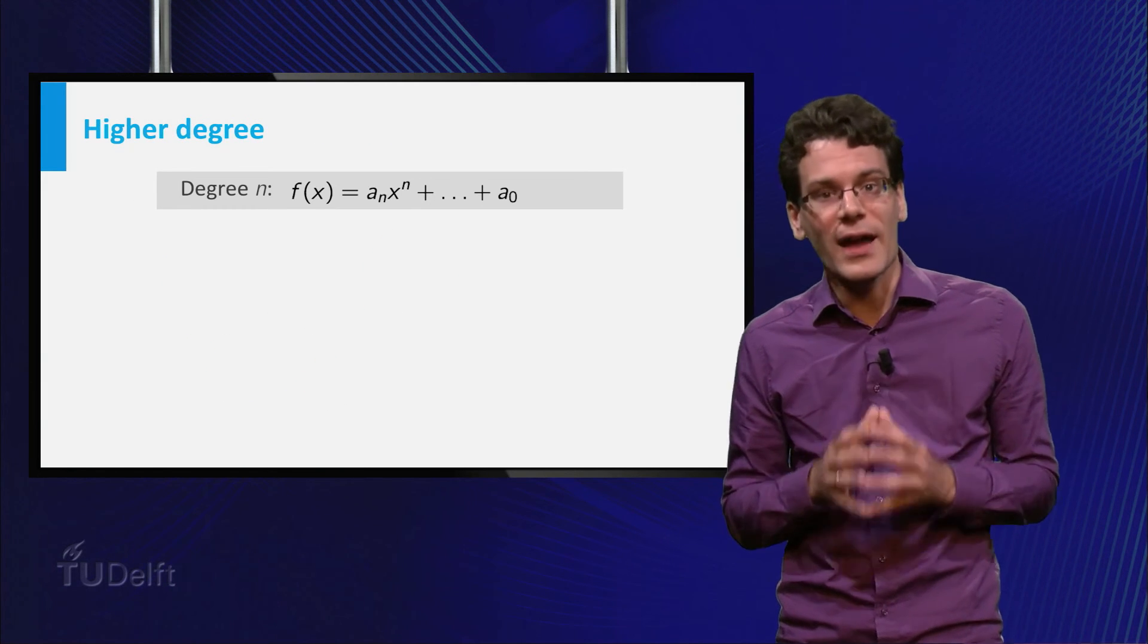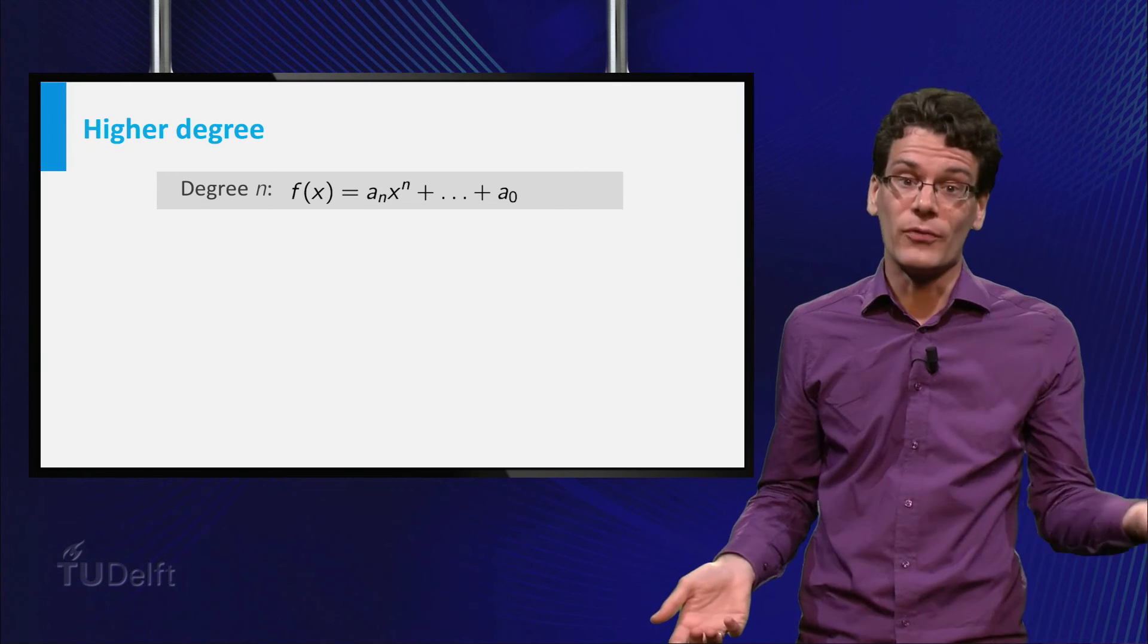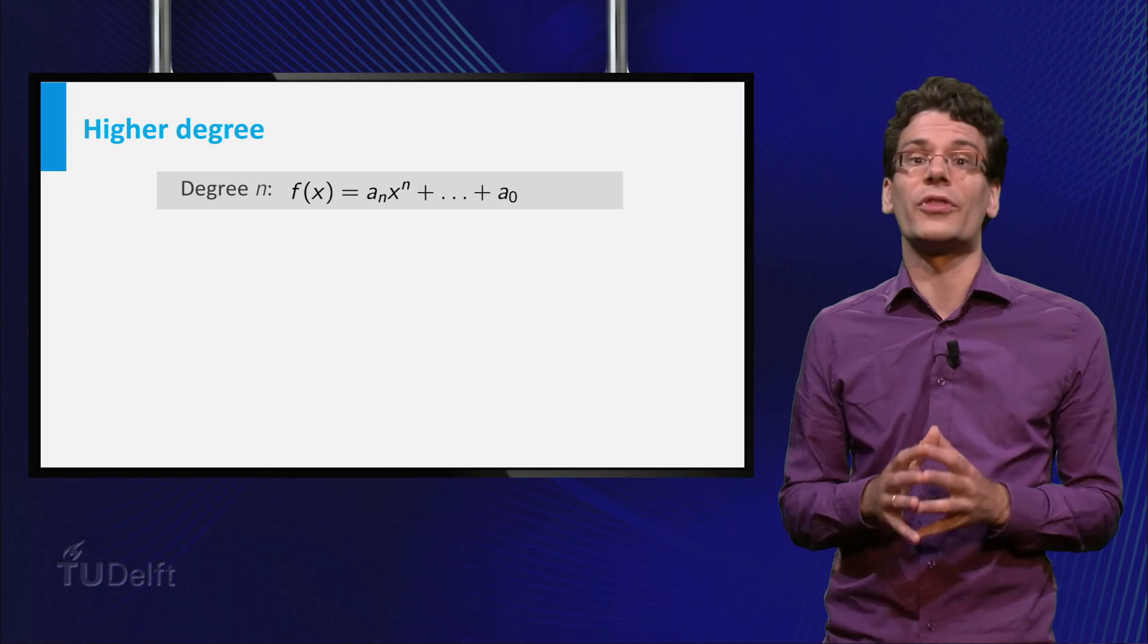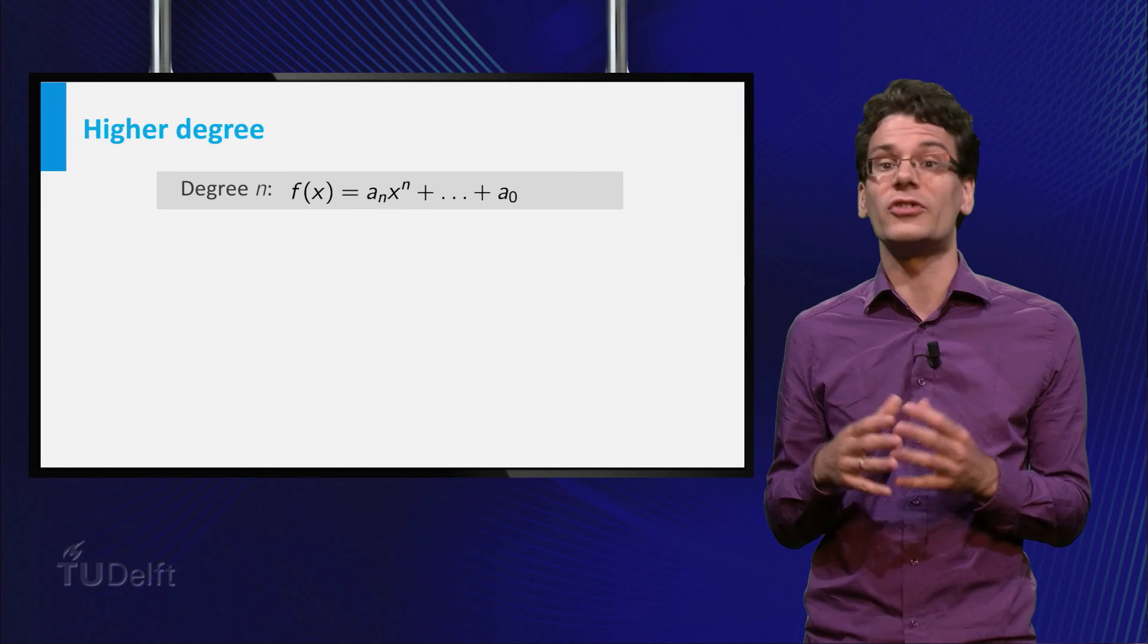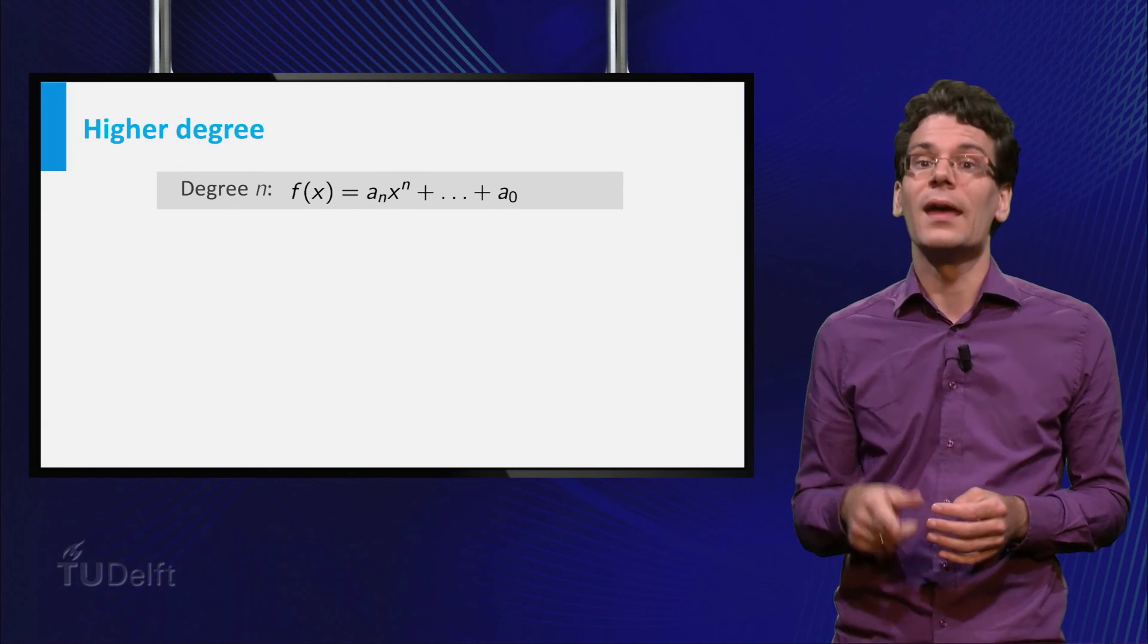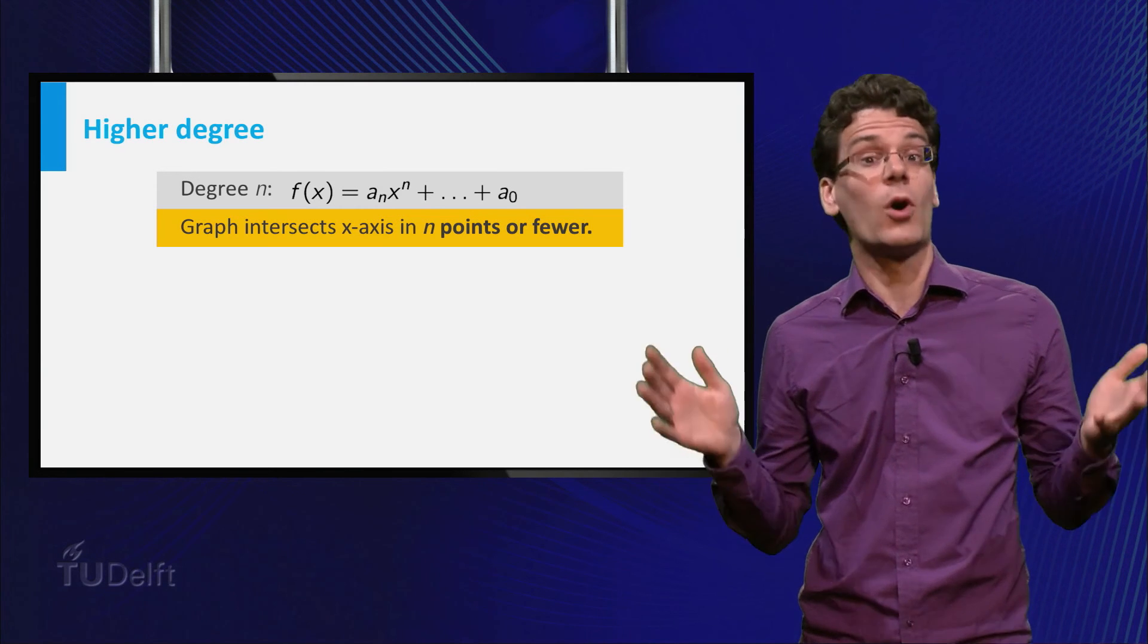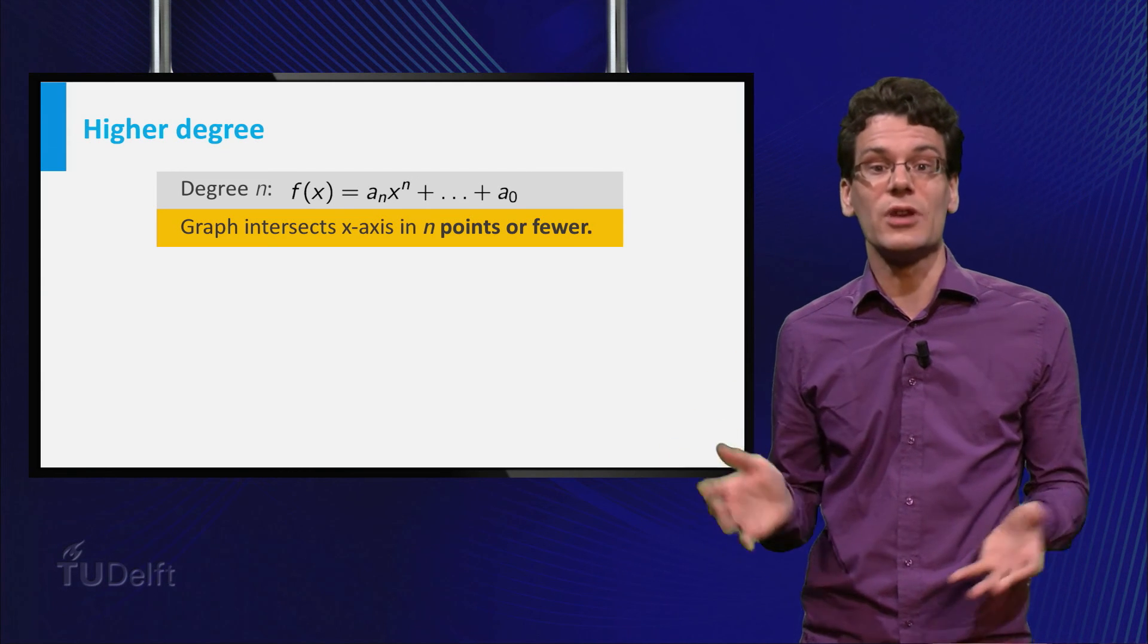What about polynomial functions of higher degree? Of course, there is always a relation between the coefficients and the shape of the graph. But this relation becomes more complicated and obscure the higher the degree gets. We can say some general things though. It turns out that the degree is a measure of how complicated the polynomial function and its graph can be. In fact, the following is true. If you look at the graph of a polynomial function of degree n, then it will intersect the horizontal axis in n points or fewer. The only exception is the polynomial which is constantly equal to zero.